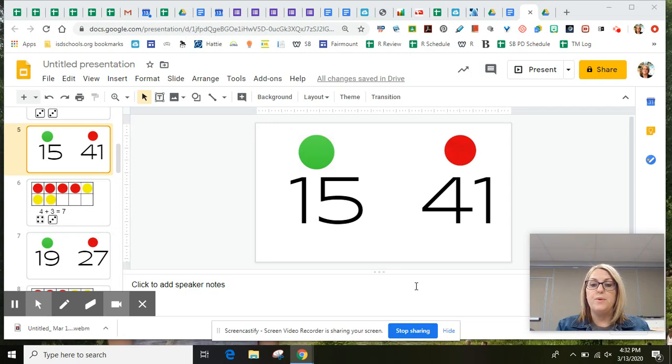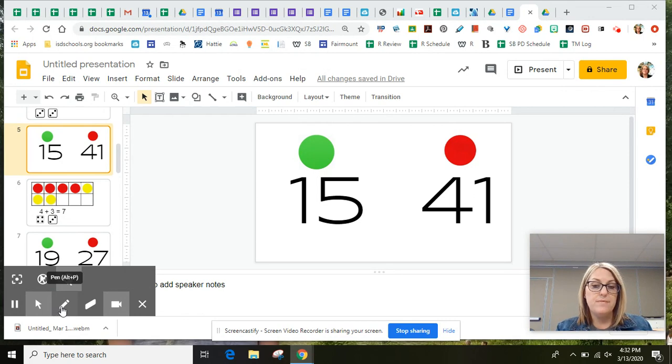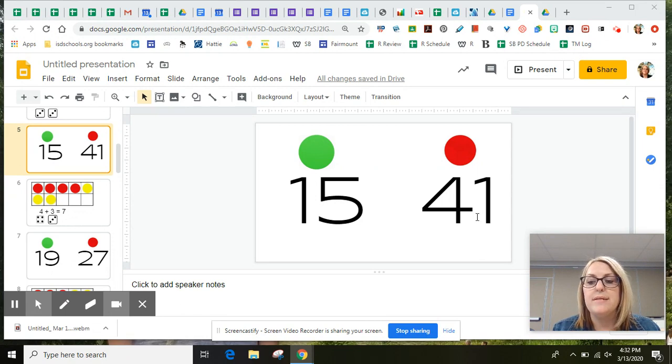Kindergarten friends, today we're going to get to do a little more practice with counting on. Can you see what our first number is? You're right, it's the number 15. And where are we going to stop? You're right, it is the number 41. Let's see if we can try it together.